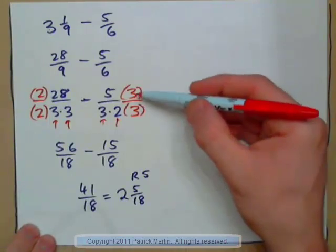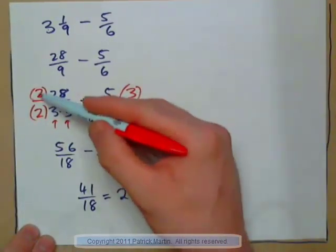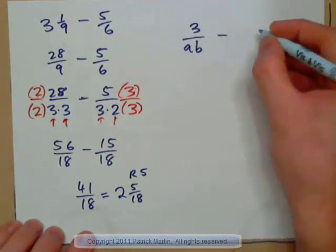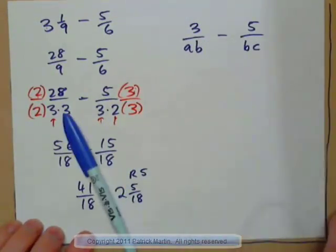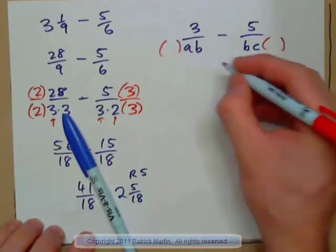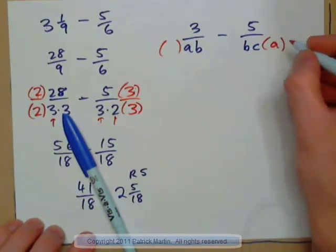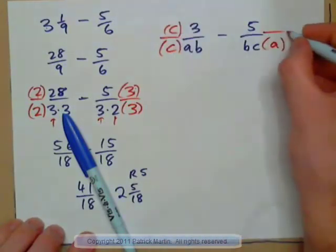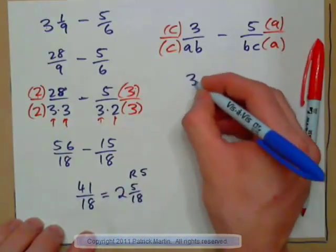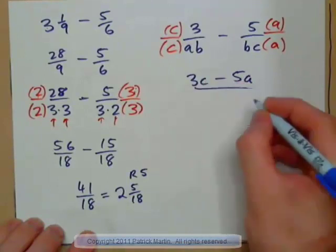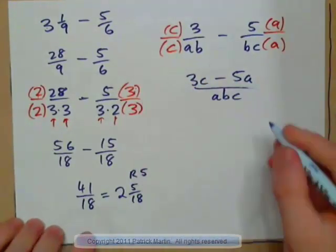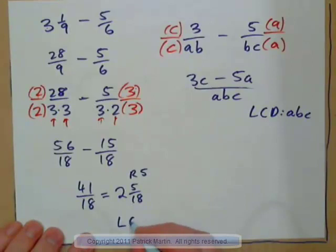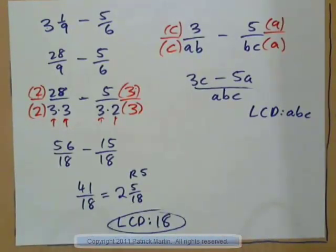Why do we use this procedure — multiplying by 3 over 3 and 2 over 2? Well, if we had something like 3 over AB minus 5 over BC — which you'll see later in algebra — the first step is to make the bottoms the same. Multiply the first by C over C and the second by A over A, and then you have ABC on both bottoms. So you get 3C minus 5A all over ABC. That's why we use this method. The lowest common denominator of both fractions in that case is ABC.